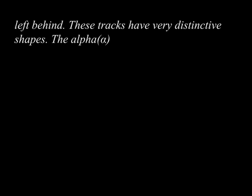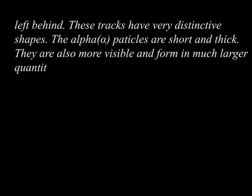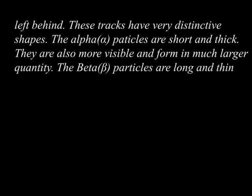These tracks have very distinctive shapes. The alpha particles are short and thick — they are more visible and form in much larger quantity. The beta particles are long and thin and are formed less periodically.